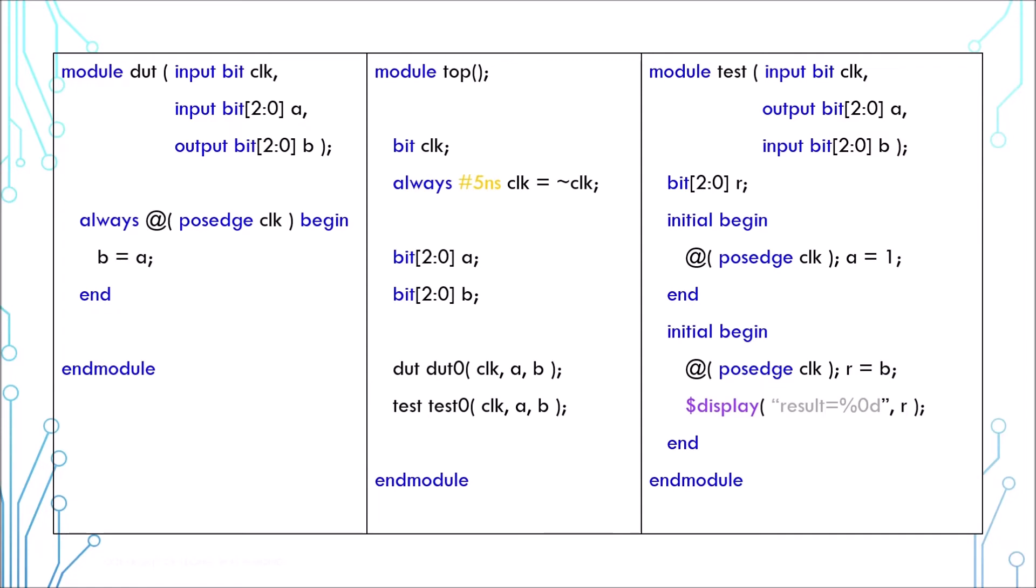However, if for some reasons we are not using non-blocking assignments, there is another way to improve predictability, which is to use program block for test.